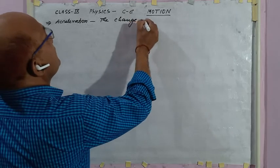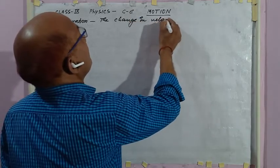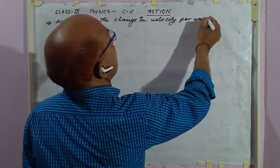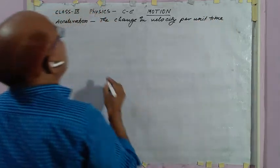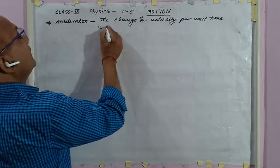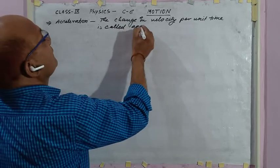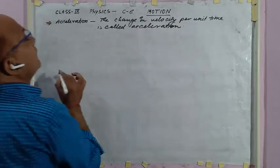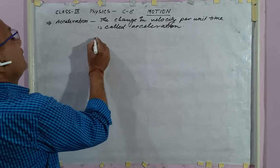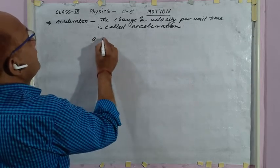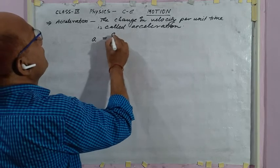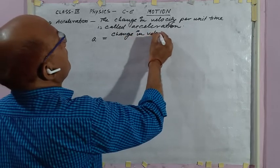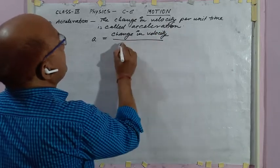The change in velocity for unit time is called acceleration. Here, acceleration is denoted by A.